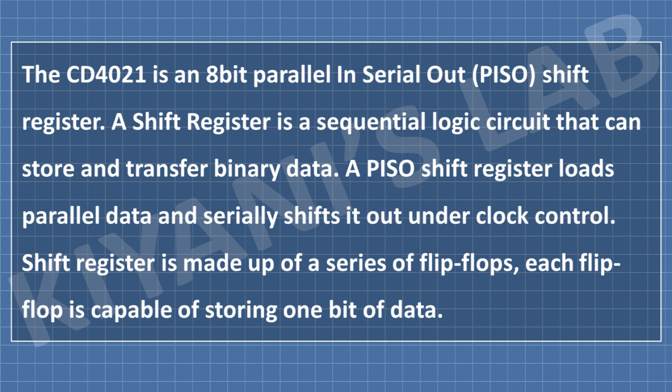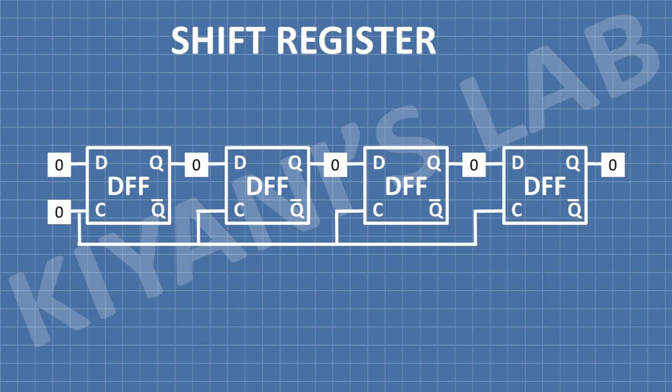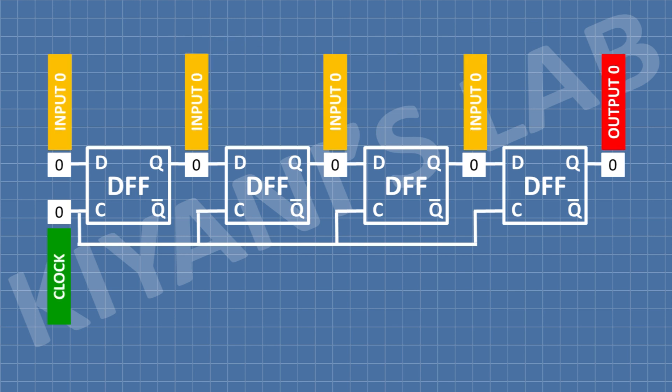A shift register is made up of a series of flip-flops. Each flip-flop is capable of storing one bit of data. This is a 4-bit shift register made with D flip-flops, showing its input, output, and clock signal. I have loaded data at the input, and with the clock signal the data is shifted out at the output.